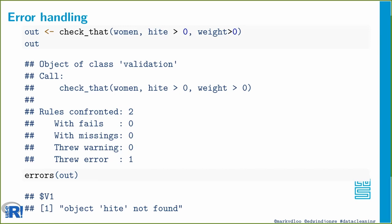There's also error handling in validate. If you specify the wrong variable — say you misspell 'height' as 'hight' when checking the women dataset — it will throw an error that height was not found and report that rule as errored. This is different from a failed rule, where the rule was correct but the data record wasn't. The rule errored because the variable wasn't found in the data, which is quite helpful when you have large datasets with spelling errors.